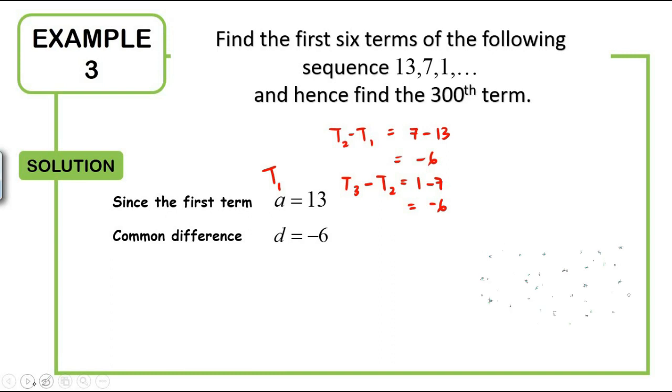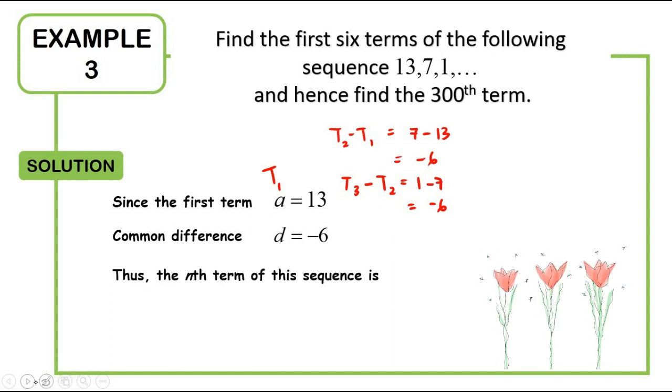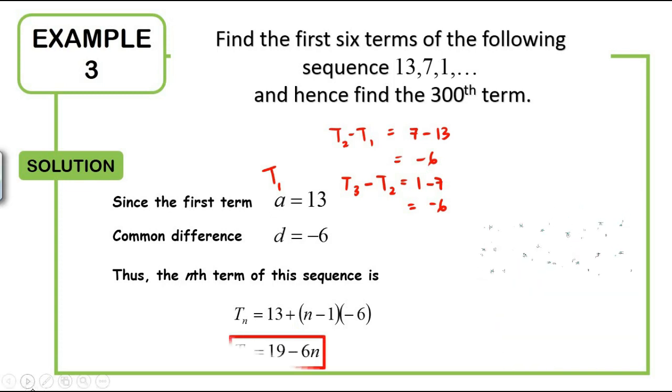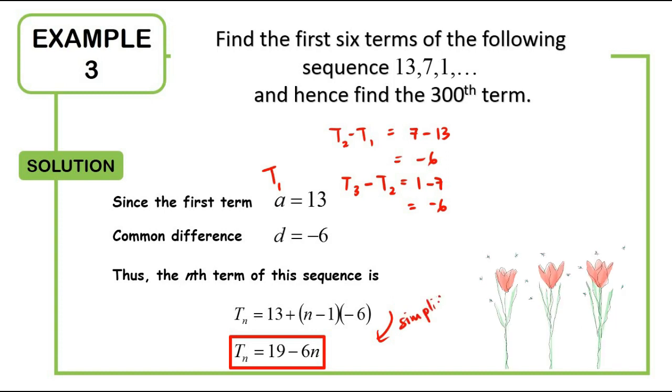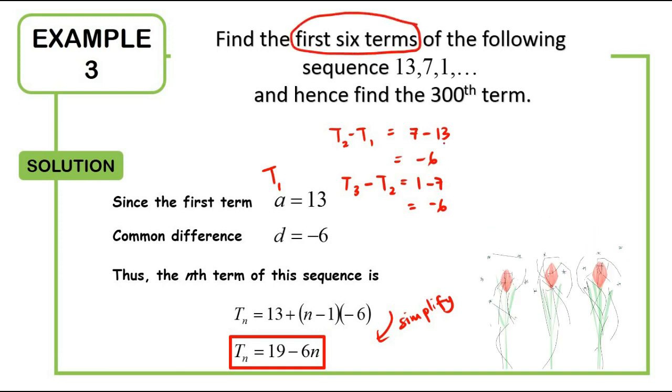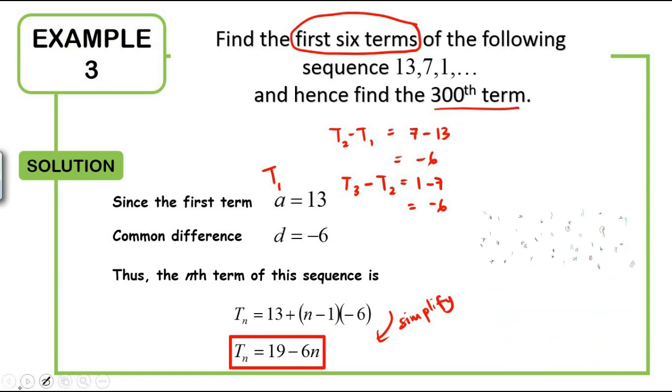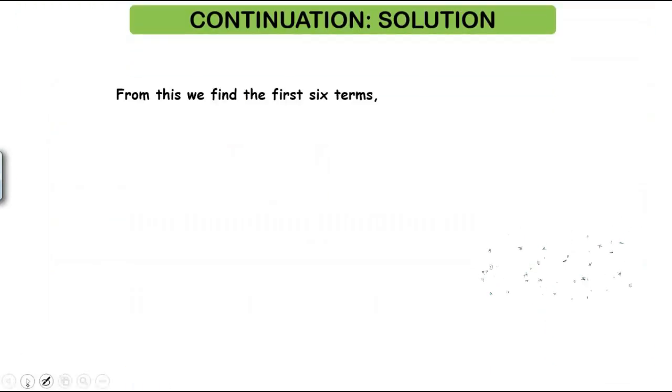So as simple as we are having our a as well as d there, the nth term for this sequence is straight away becoming 13 plus n minus 1d. If you want to simplify this one also can, but actually we can just put straight away into the formula to find the first 6 terms here and hence find the 300th term.